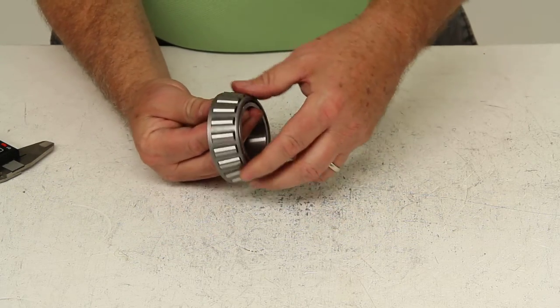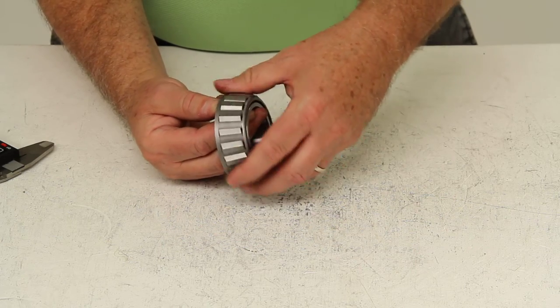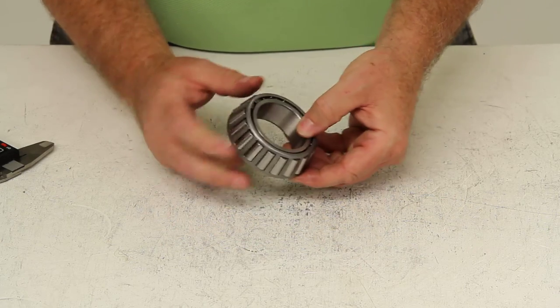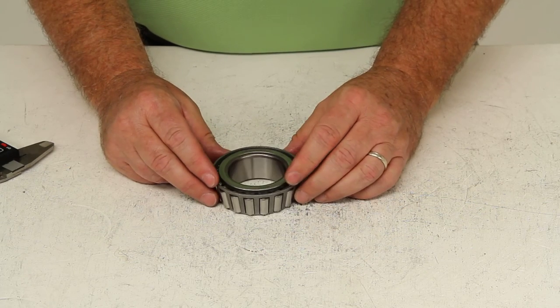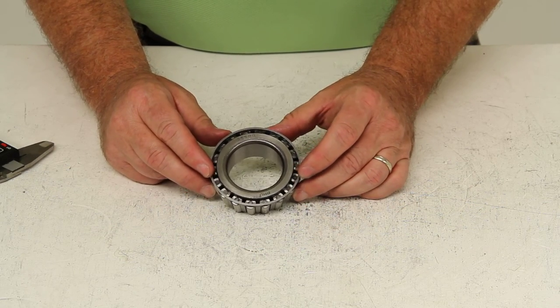Now these bearings do use a wheel bearing grease or an oil to lubricate them. And that should do it for review on part number 25580.